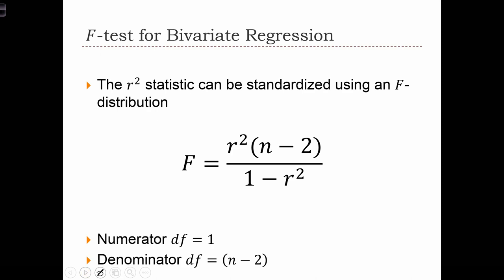We can use the r squared statistic to formulate an F statistic. This is going to be an F test, where F is equal to r squared times n minus 2 over 1 minus r squared.